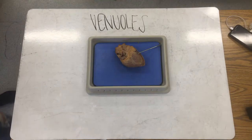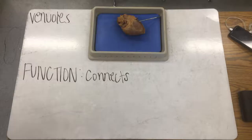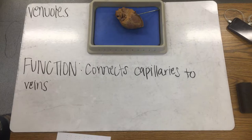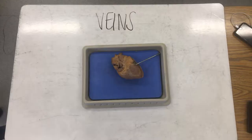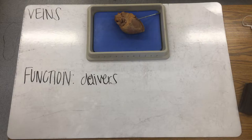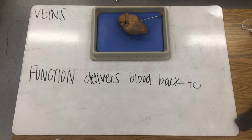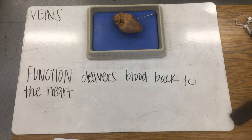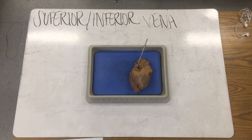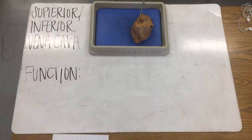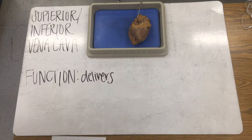Capillaries are small arteries that deliver the blood straight to body tissues. Venules are small structures that connect capillaries to veins. Veins are the structures that deliver blood back to the heart from the body. Now we are nearing the end of our ride as we approach the superior and inferior vena cava, the structure that delivers blood straight back to the right atrium.